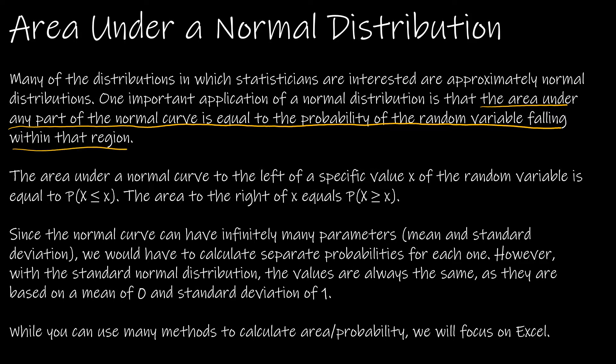So what does that mean? If I want to find the probability that Z is greater than 1.3, all I have to do is find that area. Technically there's some calculus involved because that's how we find the area under a curve. However, we don't have to do the calculus. We can use technology or the standard normal table, which will find the values for us.